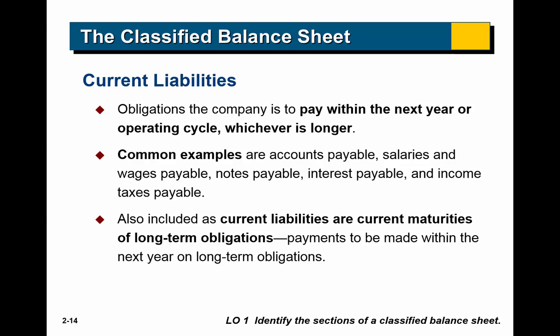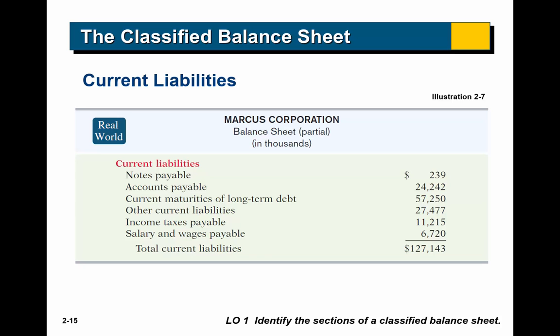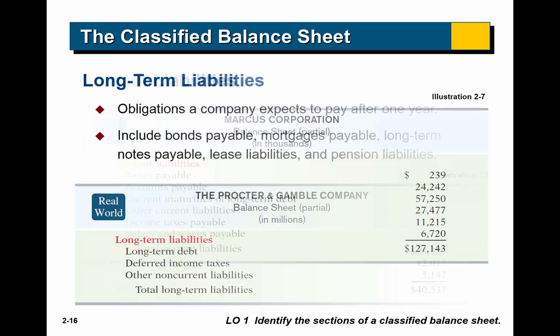Current liabilities are obligations the company has to pay within the next year or operating cycle. The most common examples are: accounts payable — when a supplier provides us with goods or services and gives us time to pay; salaries and wages payable — money owed to employees, since as soon as they work an hour we owe them but don't pay until payday; and notes payable if they're short term, interest payable, and income taxes payable. You'll notice they all have 'payable' in the name.